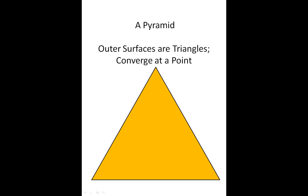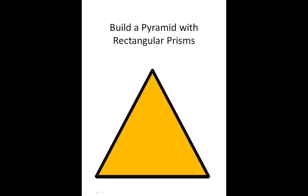Now let's go over to our pyramid. Now we're going to build a pyramid. A pyramid is a structure in which the outer surfaces are triangular and also there is a convergence point at the top. So let's begin to build our pyramid and we're going to build it out of our rectangular prisms.